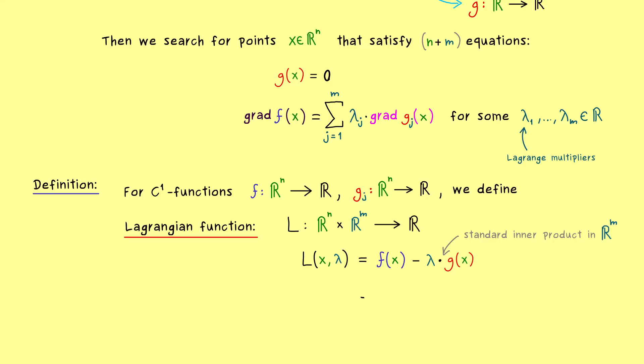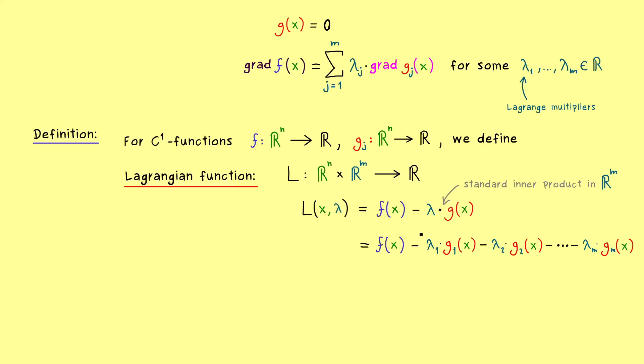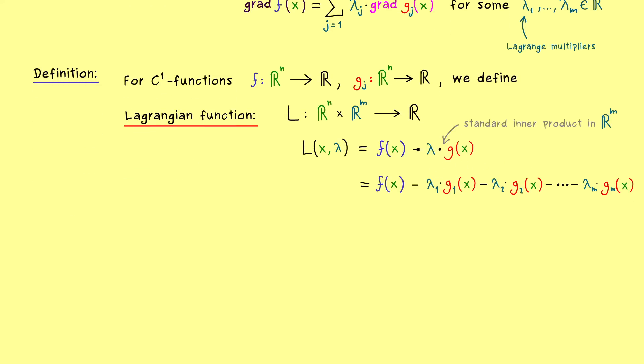So not so complicated, this thing here just represents a whole sum with m entries. And maybe as a reminder, let's write this down as well. So we have the coefficient lambda 1 times the function g1. And then we have the same with lambda 2 and g2. And this simply continues until we have lambda m times gm.